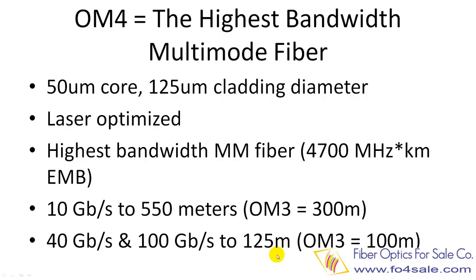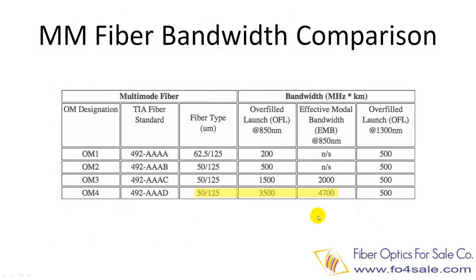On the other hand, OM3 fiber can only carry 10 Gbps to 300 meters, and 40 Gbps and 100 Gbps to 100 meters. This table shows the bandwidth difference among OM1, OM2, OM3, and OM4 fiber.